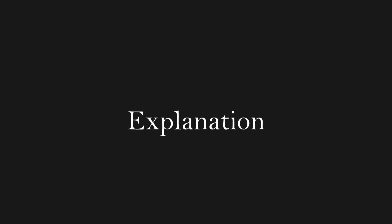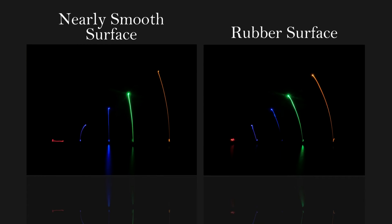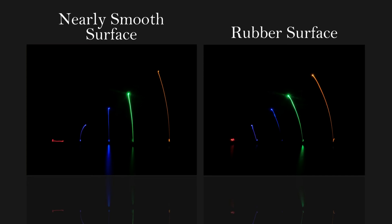Why is this? When we examine our two cases side by side we see the differences in the paths of the rigid body through the two cases. On the smooth surface the center of mass moves in a straight line vertically. On the rubber surface the center of mass moves in a curve to its final position.